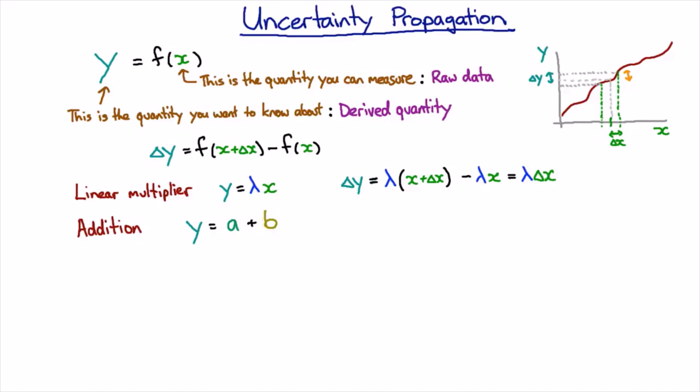In that case we can follow exactly the same process. Now we've allowed our derived quantity to depend on more than one variable.